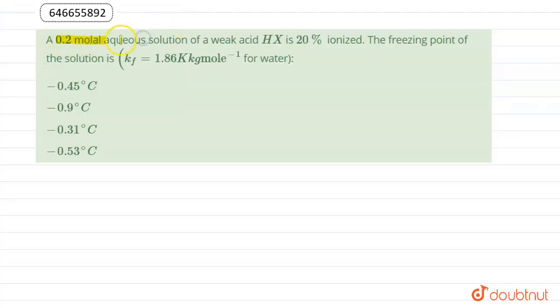0.2 molar aqueous solution of a weak acid HX is 20 percent ionized. The freezing point of the solution is, for this question Kf is 1.86 kelvin kilogram per mole for water. Option a: minus 0.45 degree centigrade, option b: minus 0.9 degree centigrade, option c: minus 0.31 degree centigrade, and option d: minus 0.53 degree centigrade.